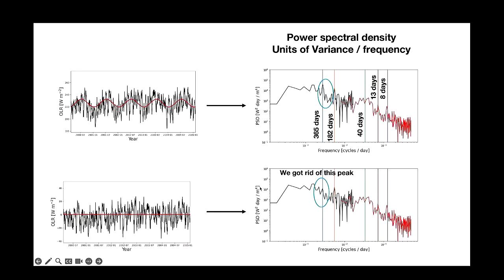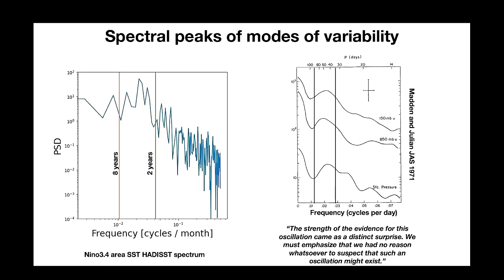In the version of the spectrum where we removed the annual harmonic, we've got rid of that annual peak, but everything else is completely unchanged because all the other frequencies are still exactly the same as they were in the original time series.